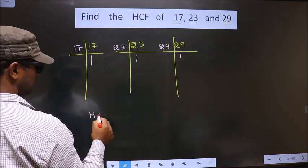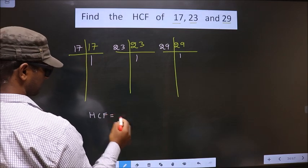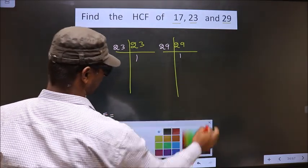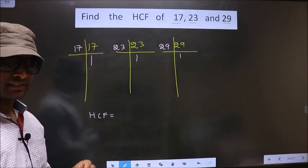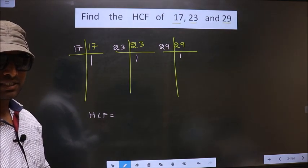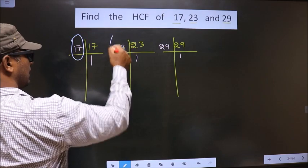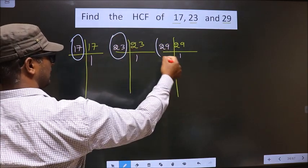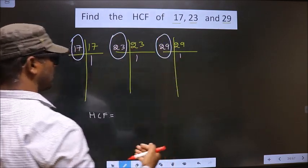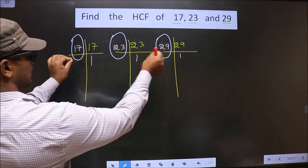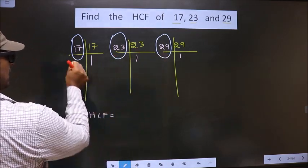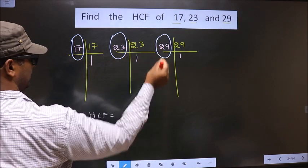So now our HCF is... HCF is the product of numbers that are present here and here and here. So now we should look for numbers that are present in these 3 places. That is here, here and here.